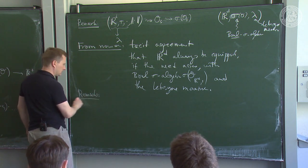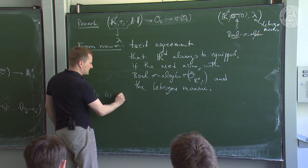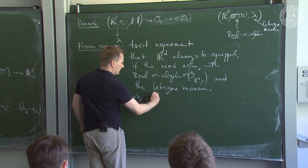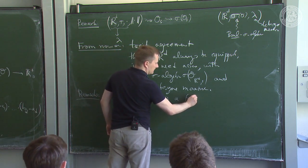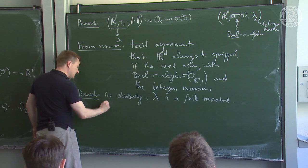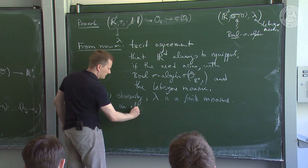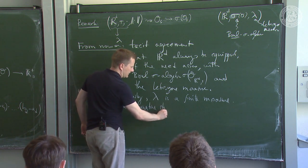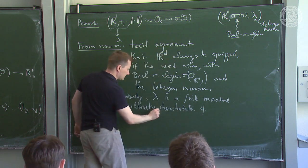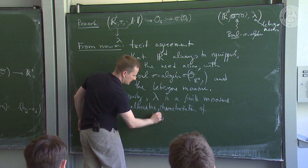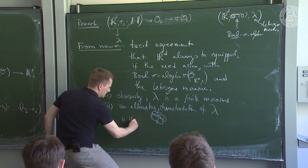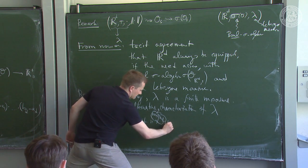Two final remarks on the Lebesgue measure: first, λ is a sigma-finite measure — please check this. Second, an alternative unique characterization: the Lebesgue measure is the unique measure that is invariant under translations — λ(A + v) = λ(A) for all measurable A and all v ∈ ℝ^d — and assigns measure 1 to the unit cube [0,1]^d.